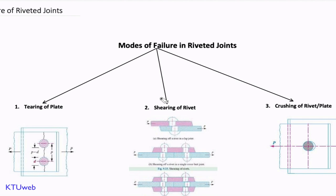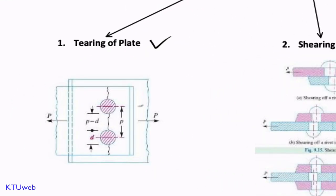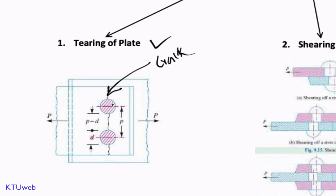The first category is tearing of plate, the second is shearing of rivet, and the last is crushing of plate. In the first case — tearing of plate — you can see two plates are riveted by means of rivets arranged at a distance called pitch p. This rivet fails due to a crack within the sheet along the row of rivets. Even though the rivets are very strong, if the plate fails upon application of a tensile load p, this entire joint will fail.